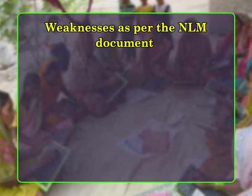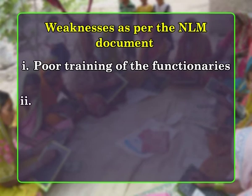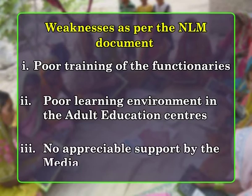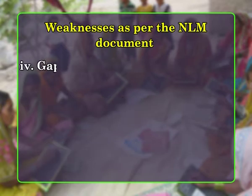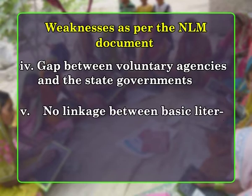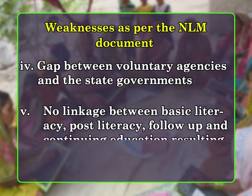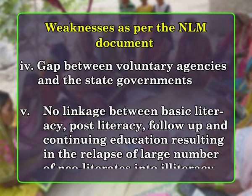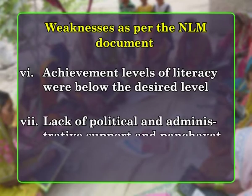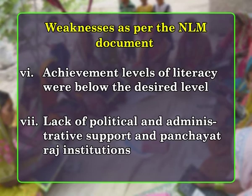The reasons for the dismal performance of the program, as per the National Literacy Mission document, were: number one, poor training of the functionaries; number two, poor learning environment in the adult education centers; number three, no appreciable support by the media; number four, gap between voluntary agencies and the state governments; number five, no linkage between basic literacy, post-literacy, follow-up, and continuing education, resulting in the relapse of large numbers of neo-literates into illiteracy; number six, achievement levels of literacy were below the desired level; and number seven, lack of political and administrative support and Panchayat Raj institutions.